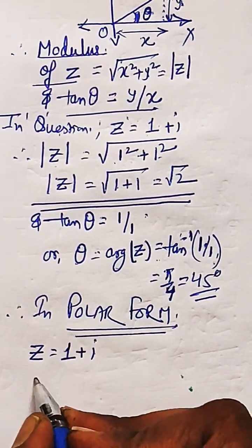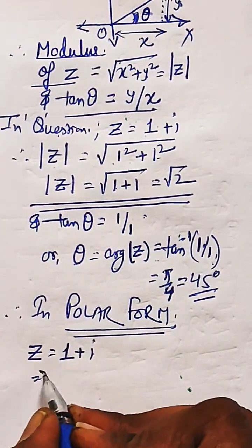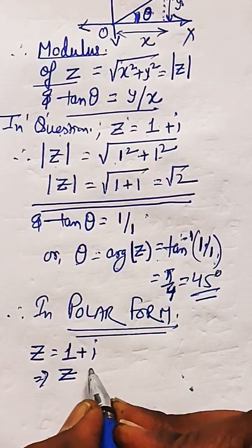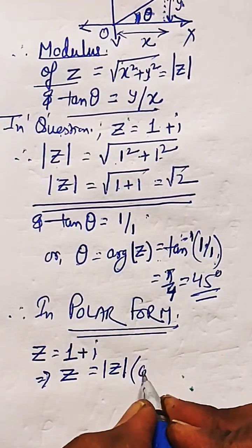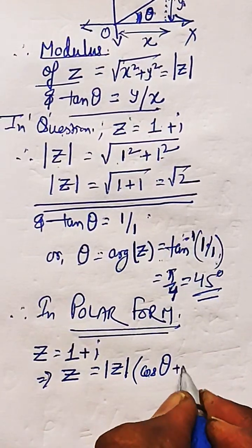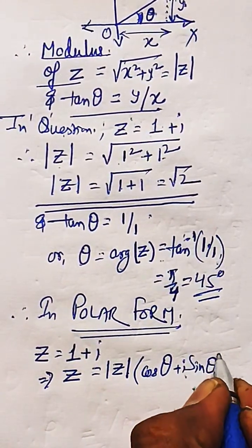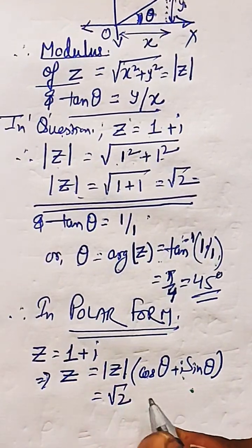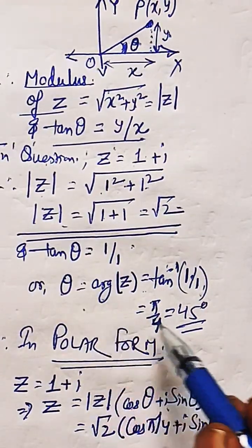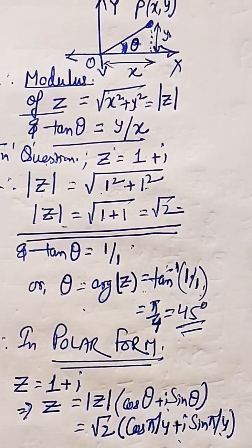So in polar form z equal to 1 plus i can be written as modulus of z into cos theta plus i sine theta. We know the value of theta and the value of mod z. Mod z is root 2, put up the value over here and put up theta as pi by 4. This is the polar form of the given complex number.